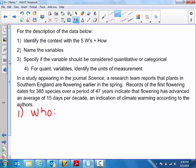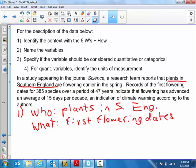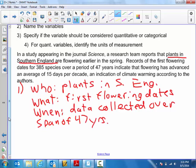First W is who. Who is being looked at? Maybe a bit of a misnomer - in this case, they're telling us we're looking at plants in southern England. What is being looked at? They tell us we've got records of the first flowering dates for 385 species. So we're looking at first flowering dates. When is this data looked at? We don't quite know that, but we do know the data was collected over a span of 47 years.